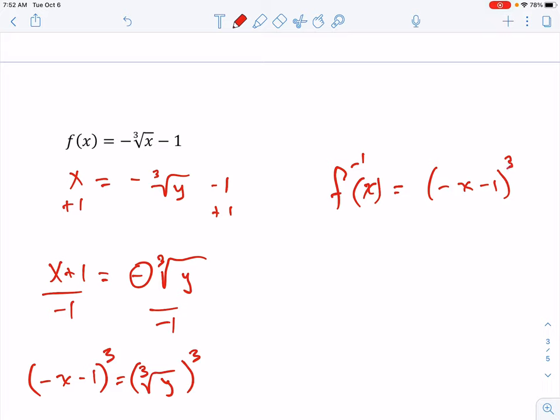Oftentimes you may see on an answer key where they don't leave that negative inside. They may just put the negative on the outside, which is also fine. If you saw that they wrote f inverse of x is equal to negative, and put x plus 1 to the third power, that would be the same function. Both would be right.